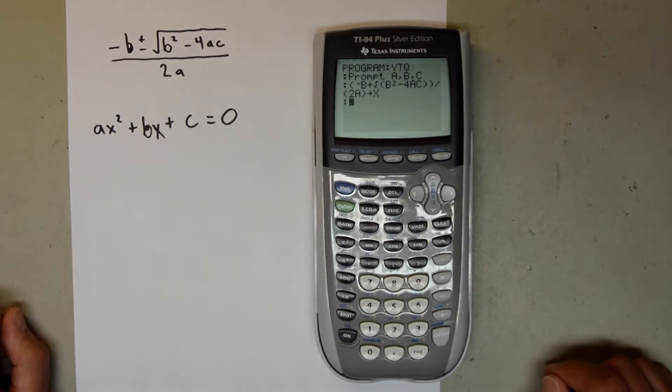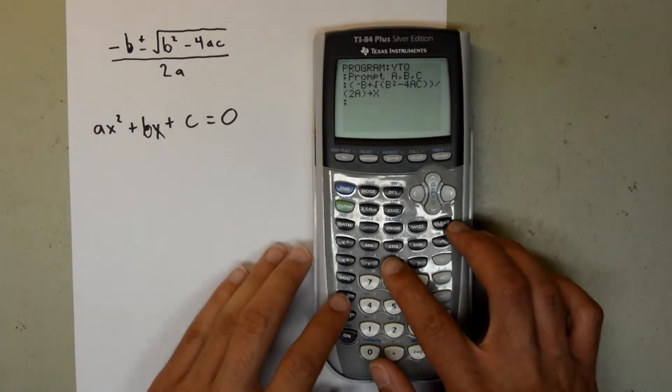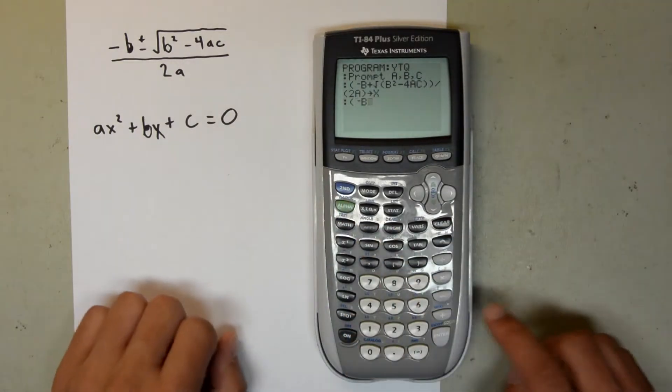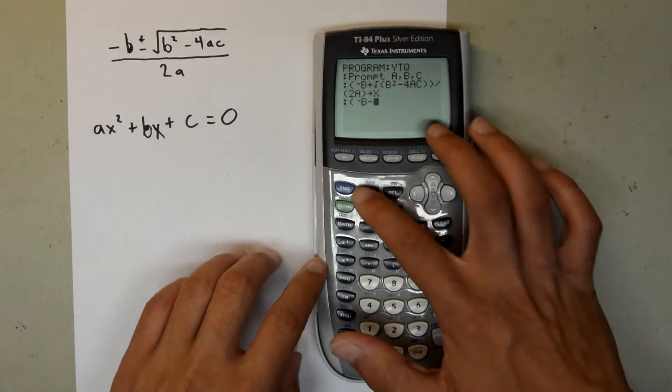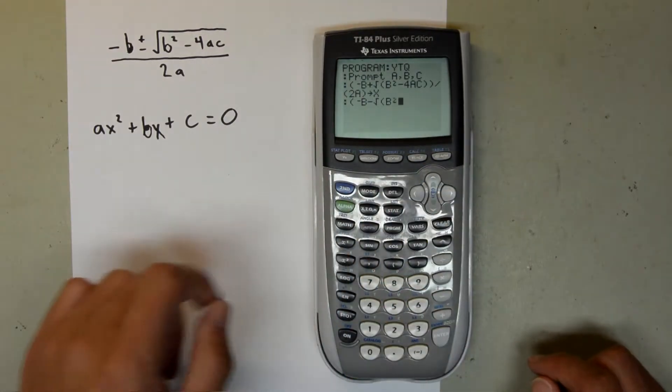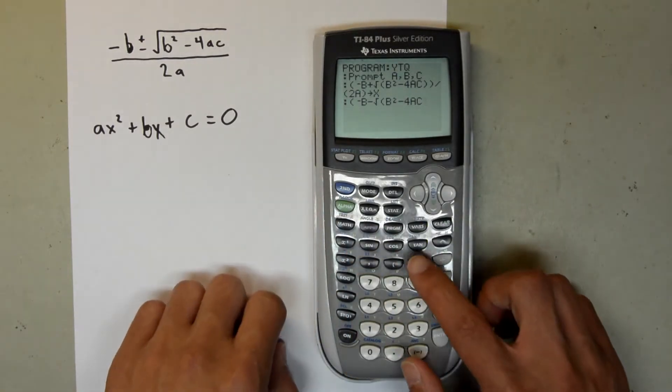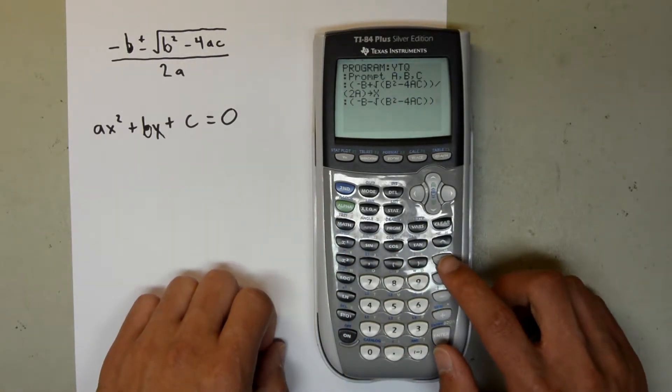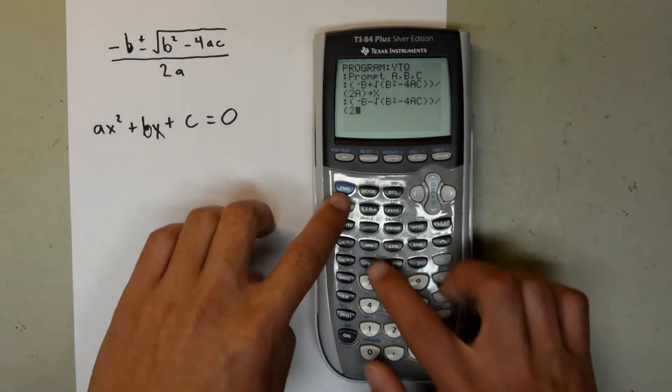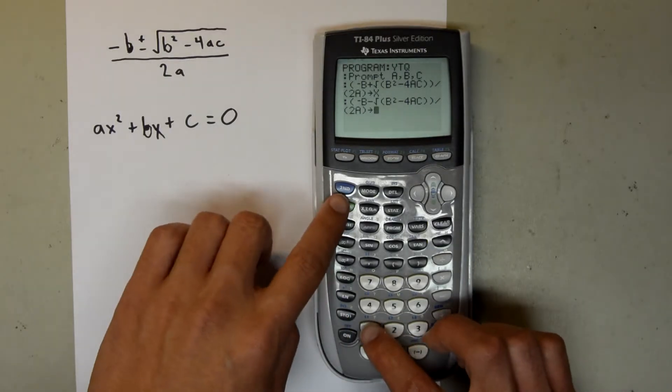And now you want to do the same thing, but make it the negative piece of the quadratic formula. So you're going to go parenthesis, negative, B, minus the square root, B squared, minus 4AC, double parenthesis, divided by, 2A, parenthesis, and store that one as Y.